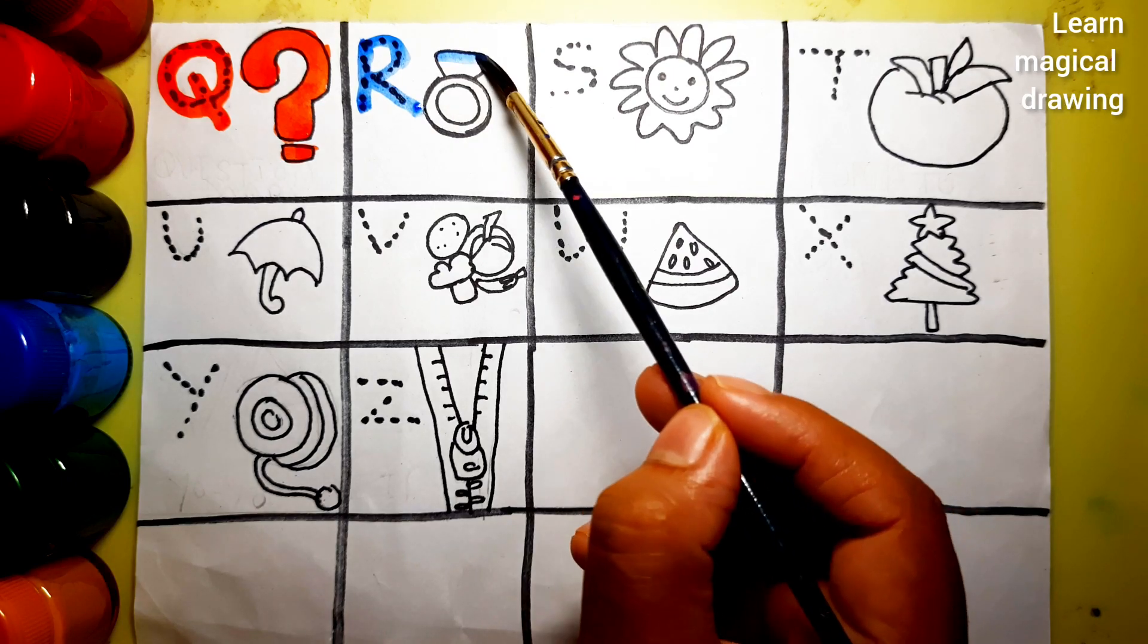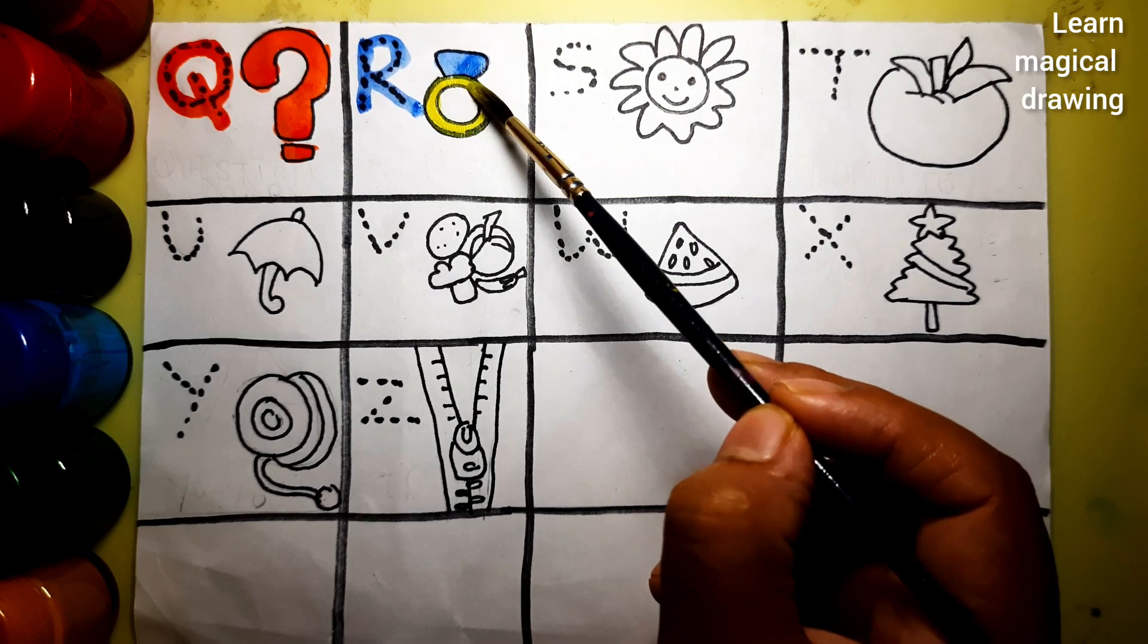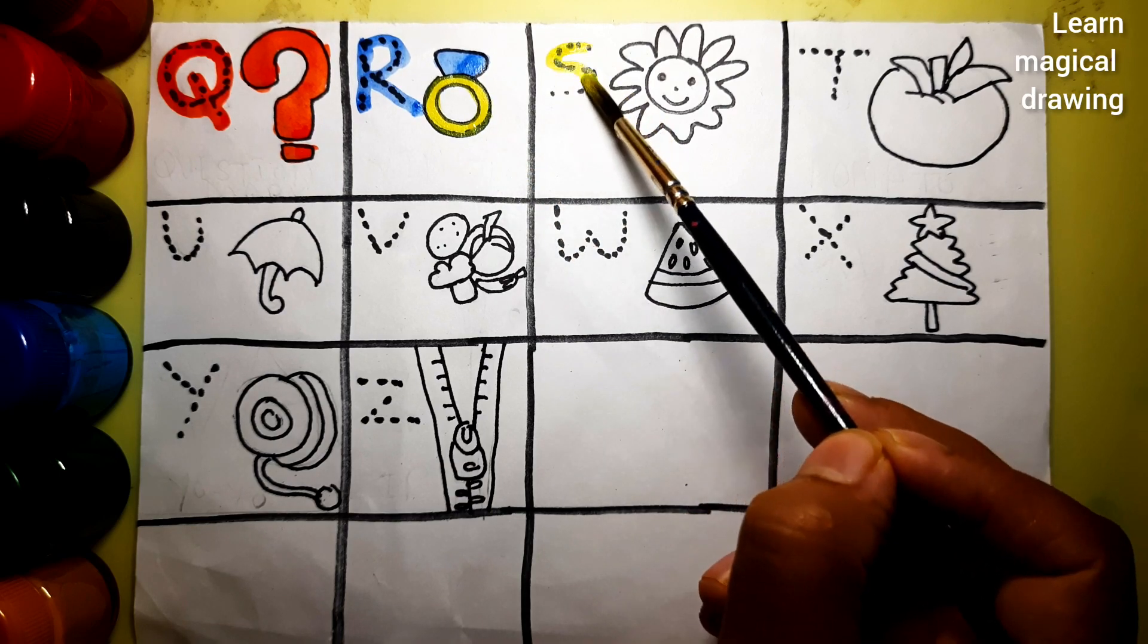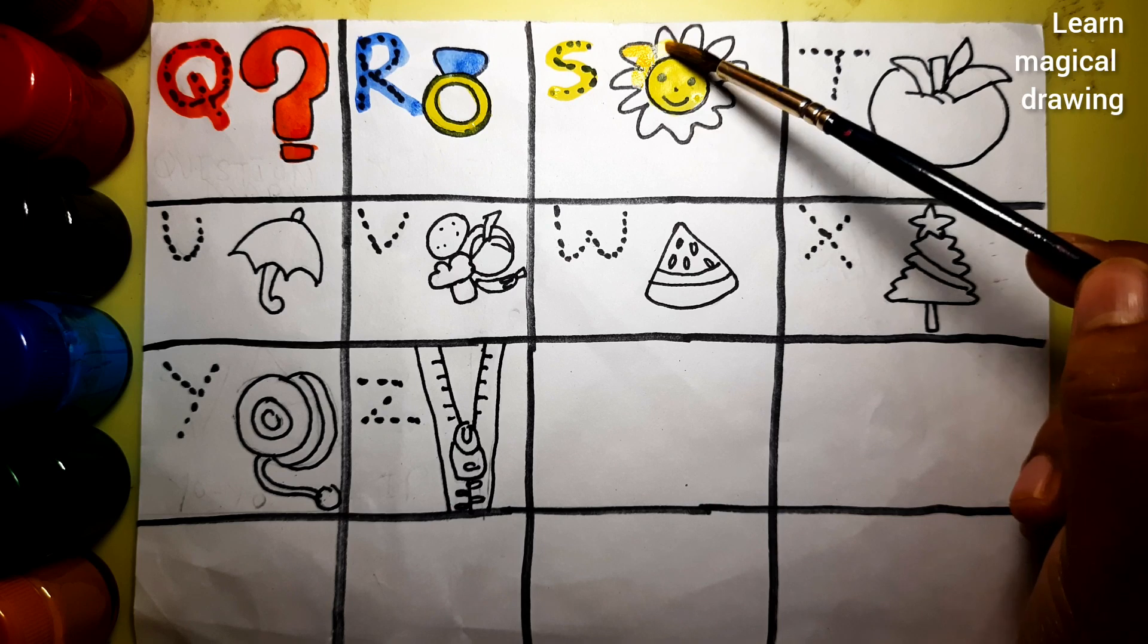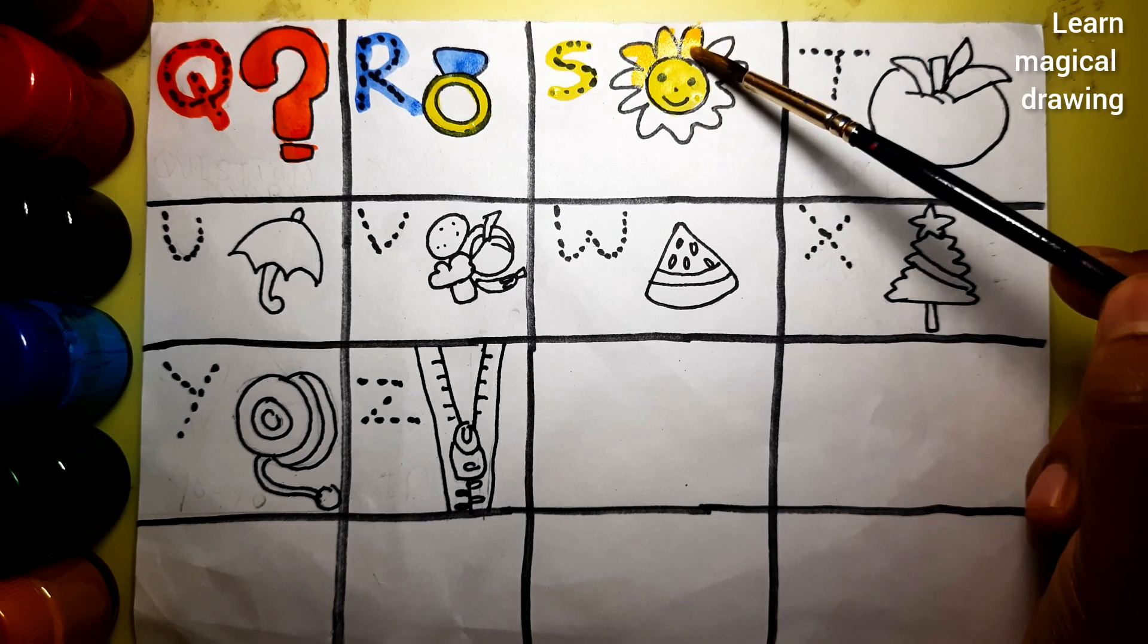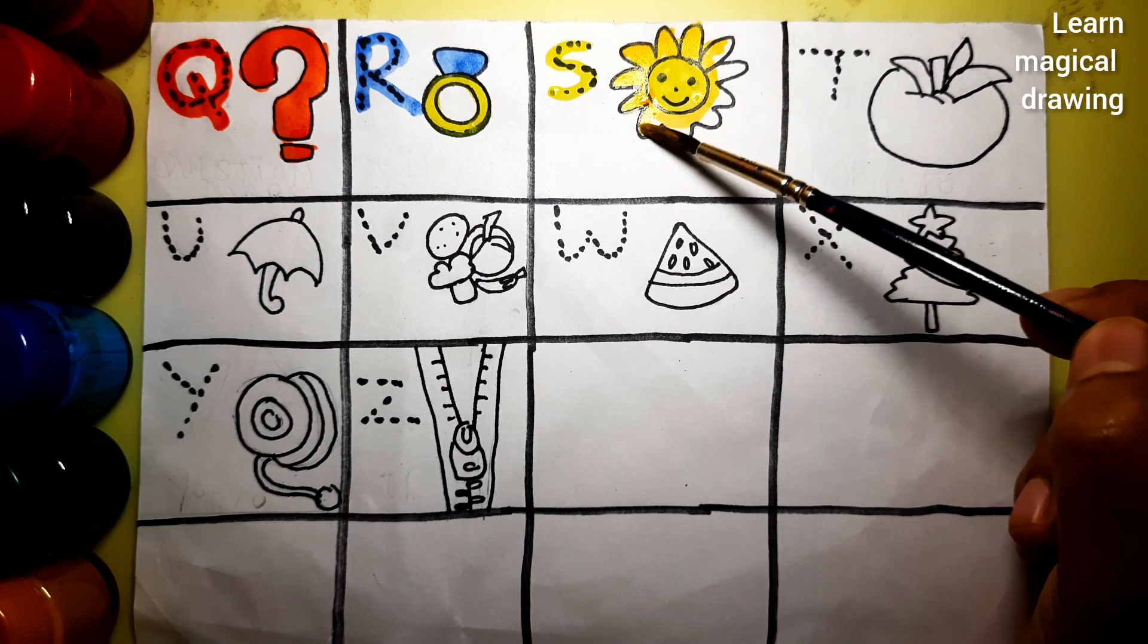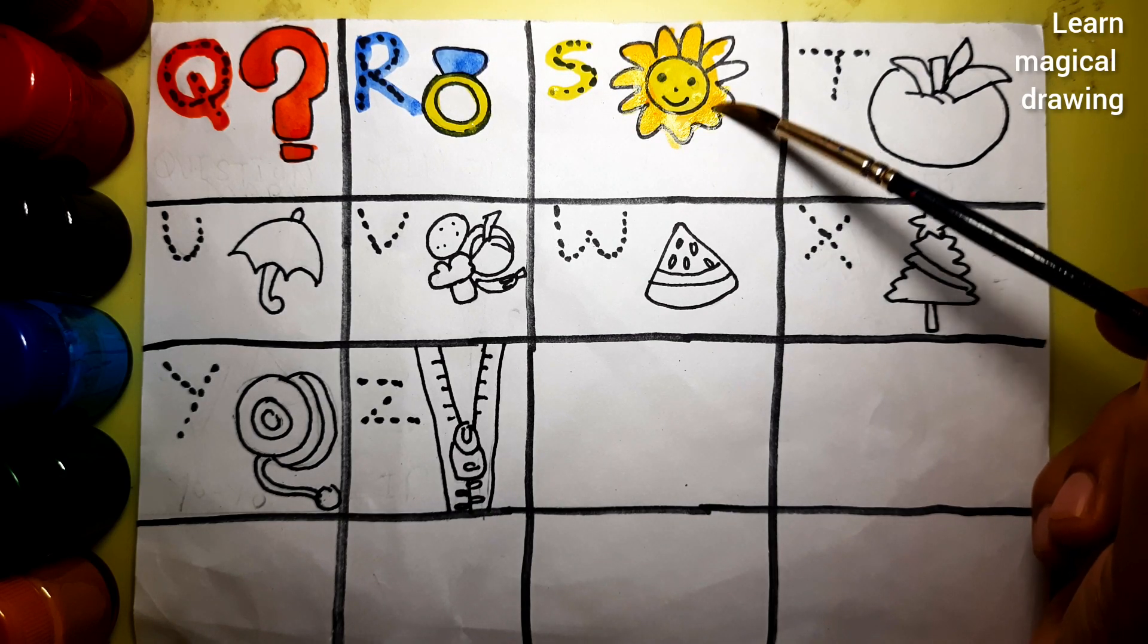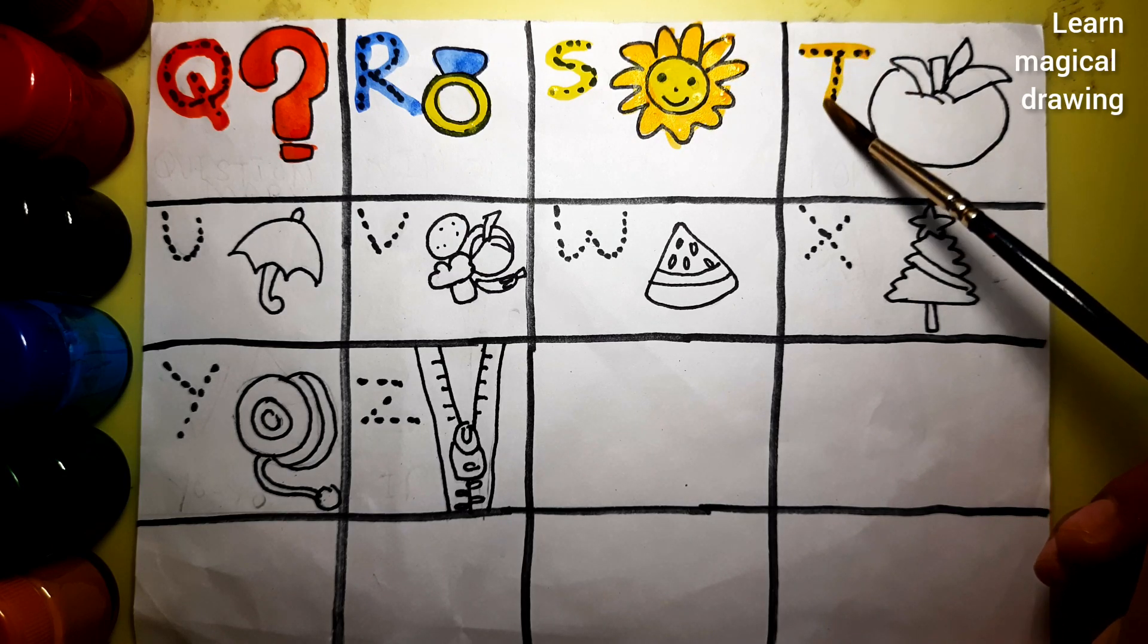R, R for ring. S, S for sun. T, T for tomato.